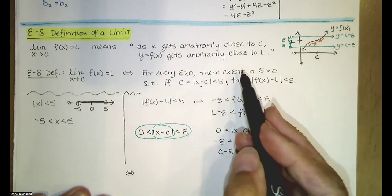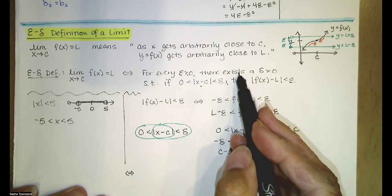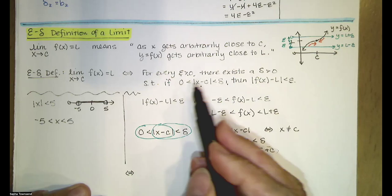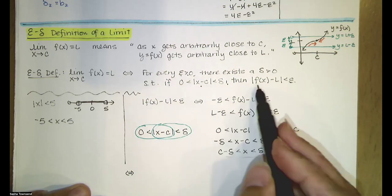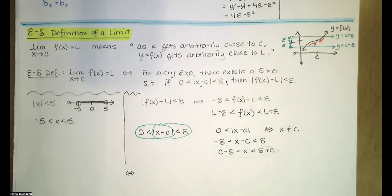We can represent this symbolically. For every epsilon greater than zero — represented by the upside-down A — there exists a delta greater than zero — represented by the backwards E — such that if the first inequality is true, then the second inequality is true. That is, this compound inequality implies this inequality.